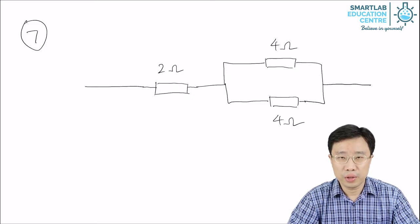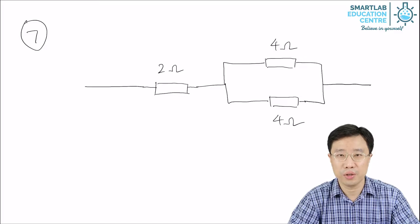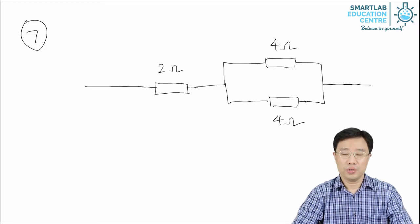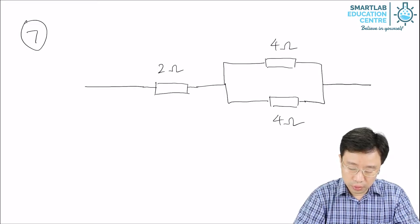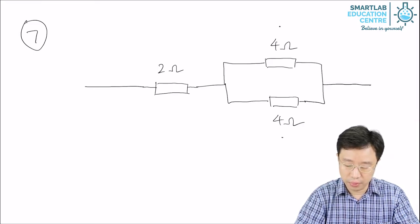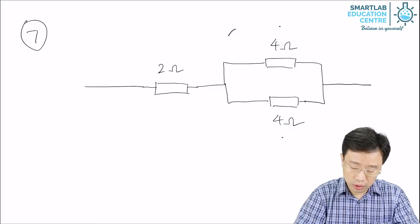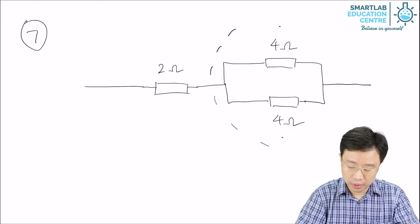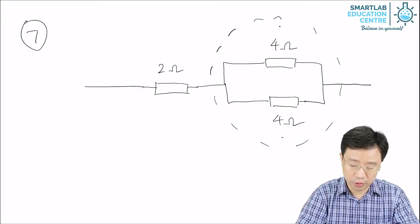Now let's go on to two examples of calculating the effective resistance of a circuit. As you can see here, we have two 4-ohm resistors in parallel, and this whole arrangement is in series with the 2-ohm resistor.